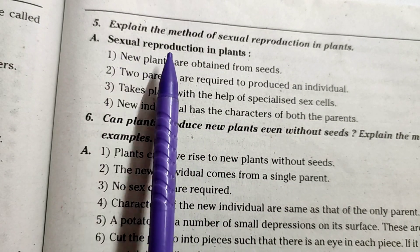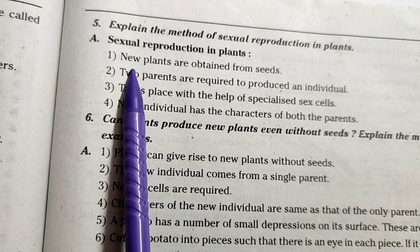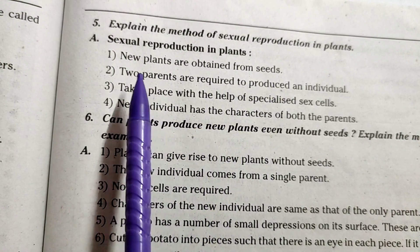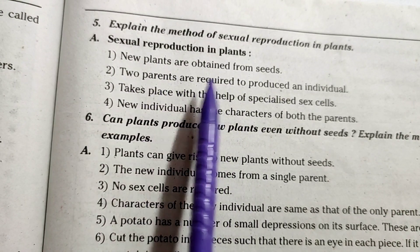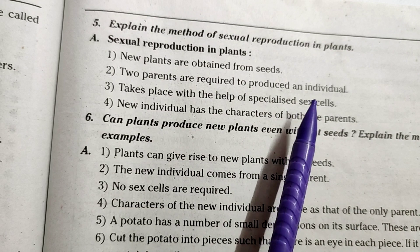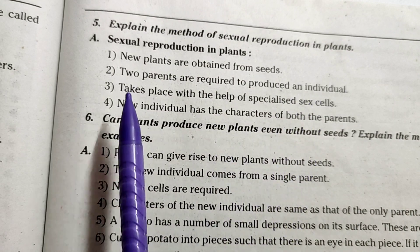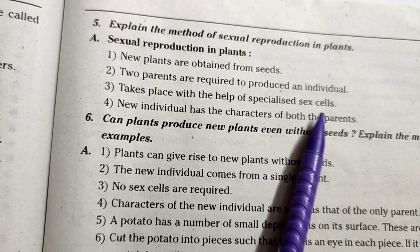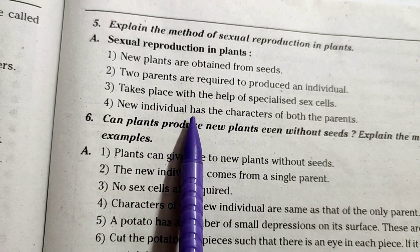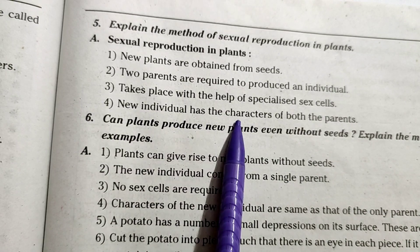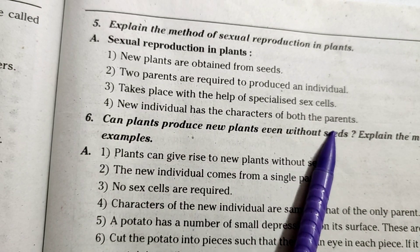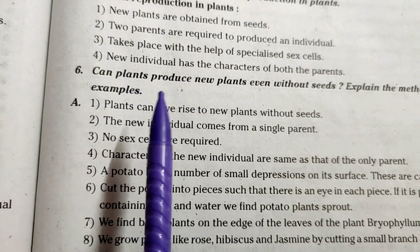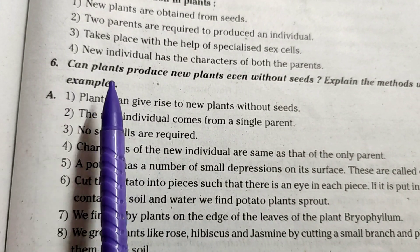Explain the method of sexual reproduction in plants. Sexual reproduction in plants: new plants are obtained from seeds; two parents are required to produce an individual; it takes place with the help of specialized sex cells; the new individual has the characters of both parents.